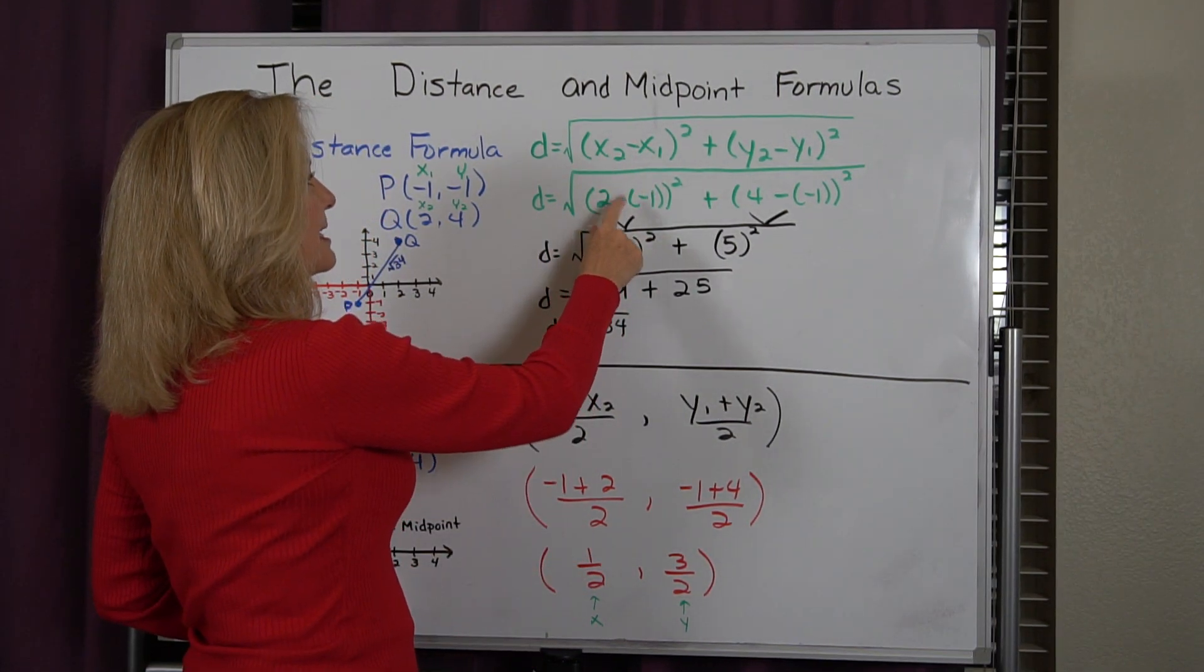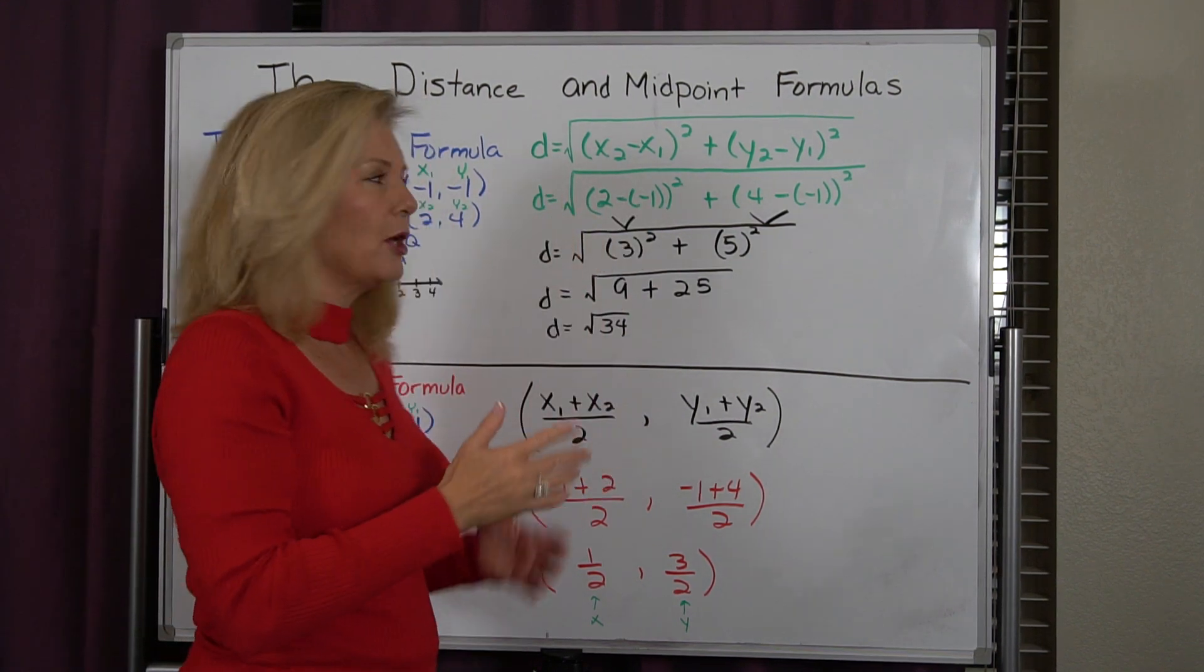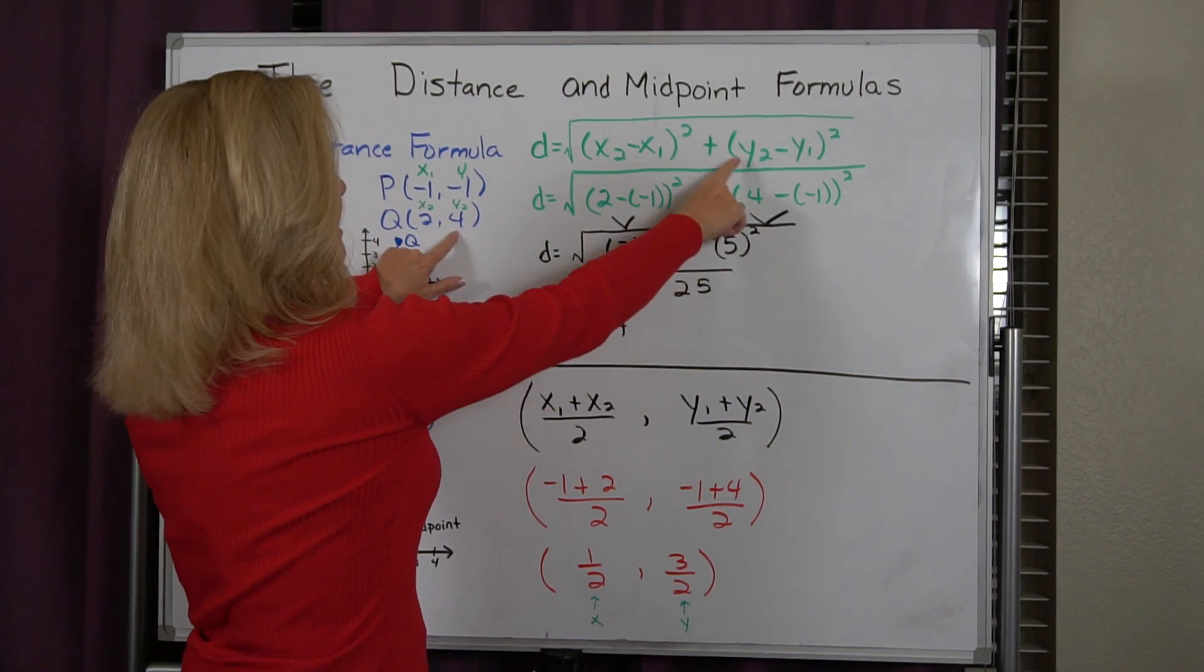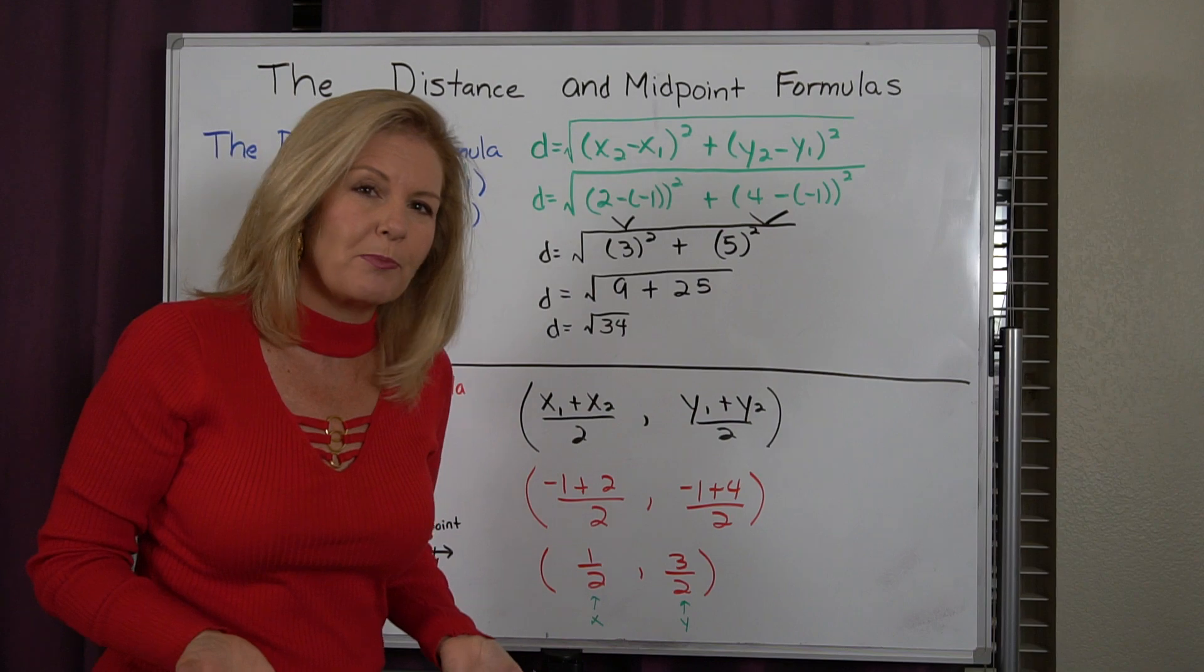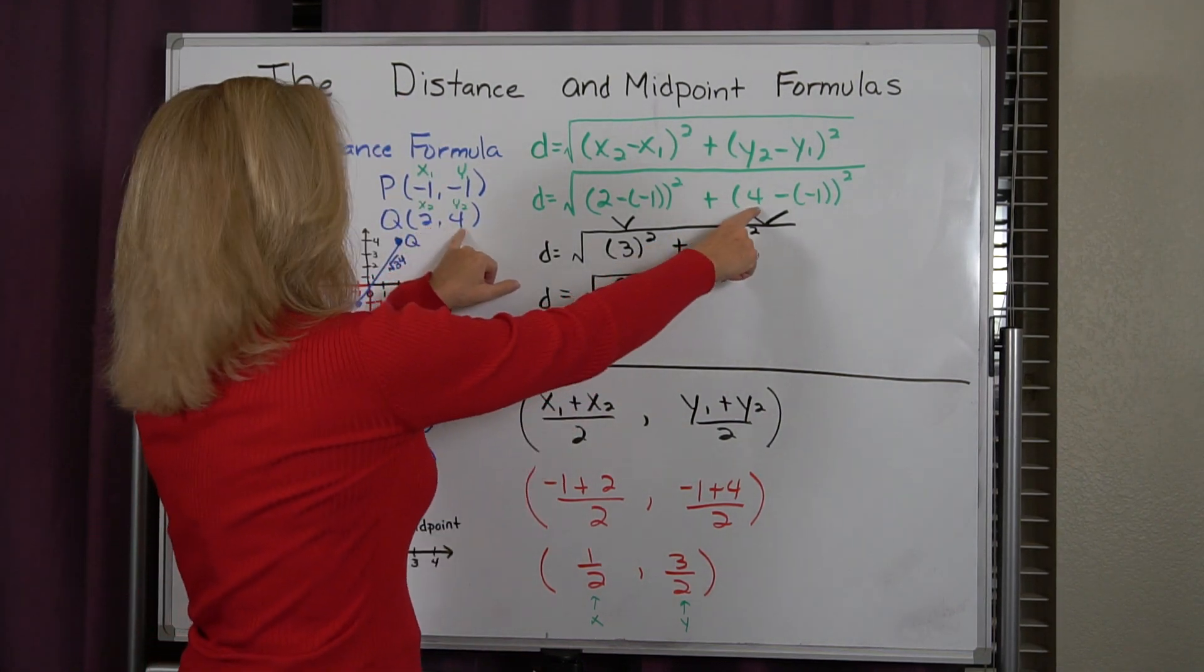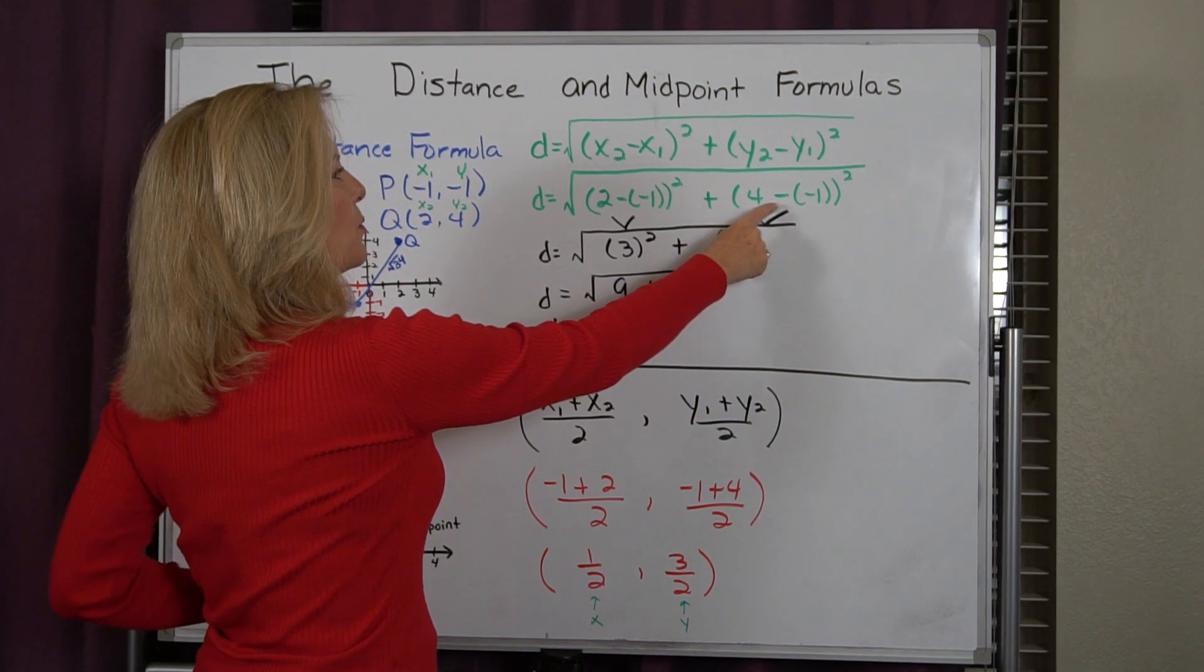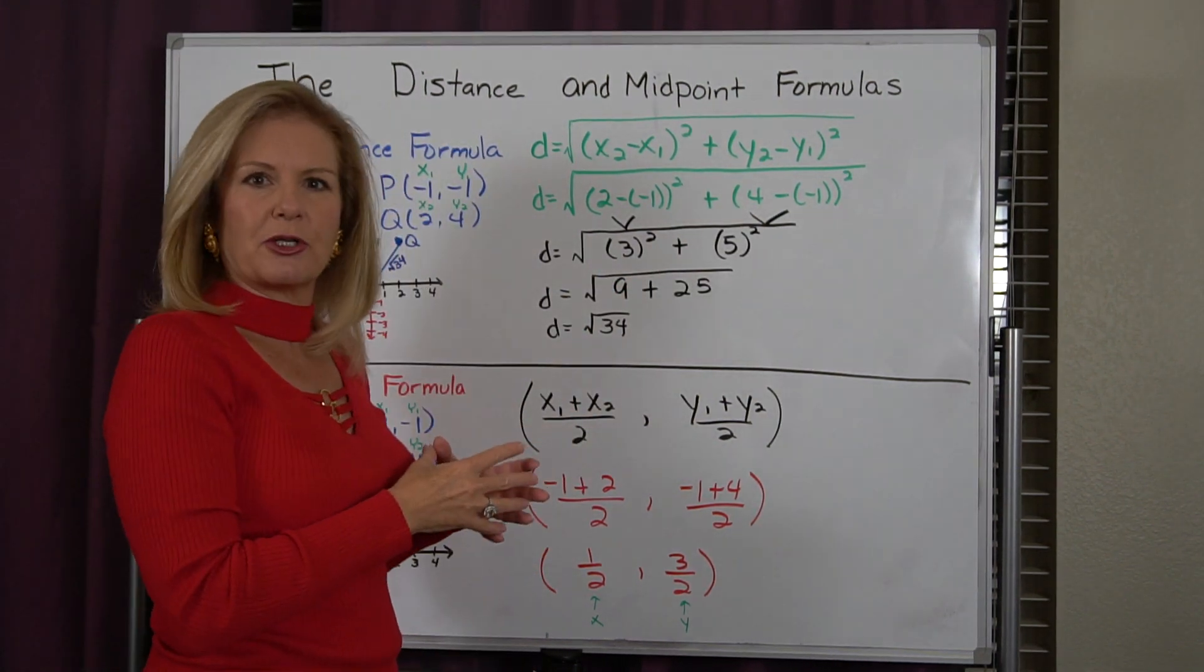So I do 2 minus, but remember x₁ is a negative number. So 2 minus negative 1. Then for my y value, I'm going to do the same thing. You have to keep the ordered pair in the same order. So since I started with Q, I have to start with Q there. So I'm going to do y₂ minus negative 1 when I substitute those values in.